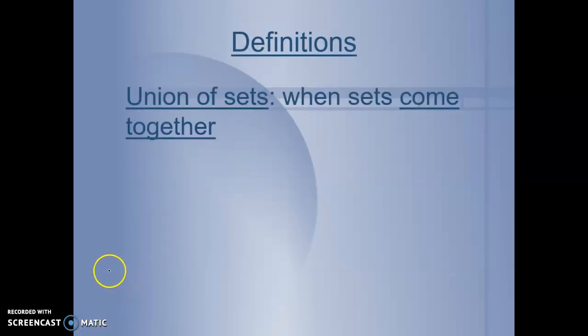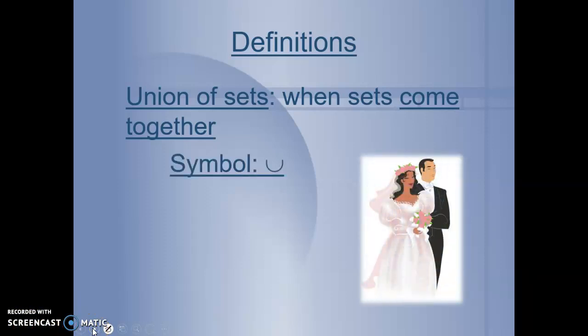A union of sets is when sets come together, when we join two things together. That's what unions mean, and in math it's no different. And we use this symbol, U. Think of it like a marriage. That's a union, when you join two things together.